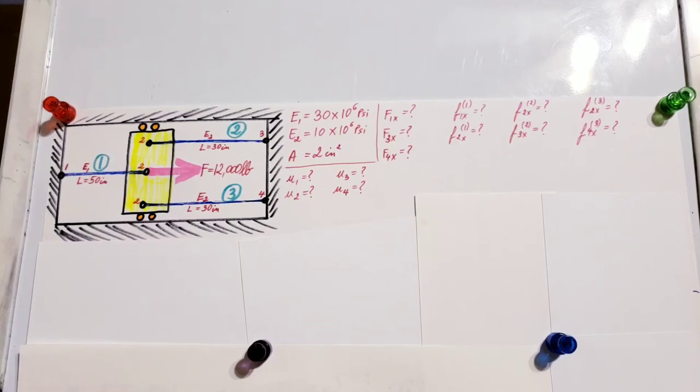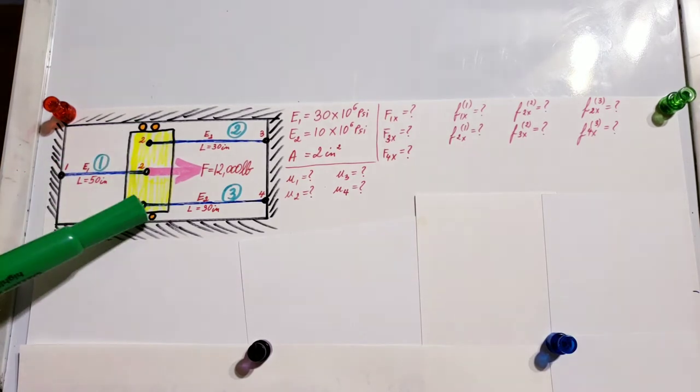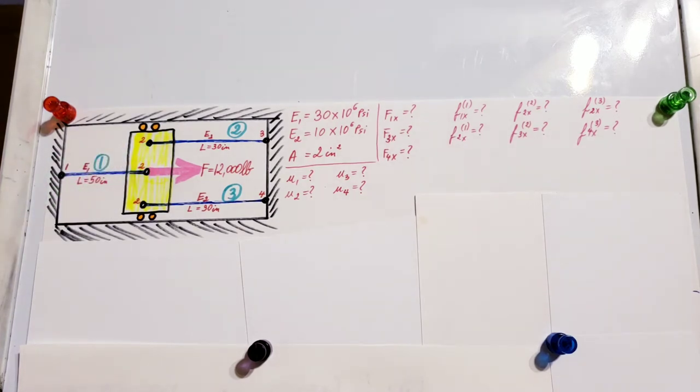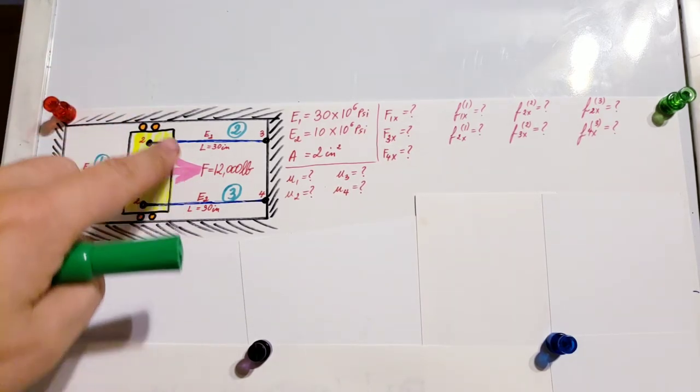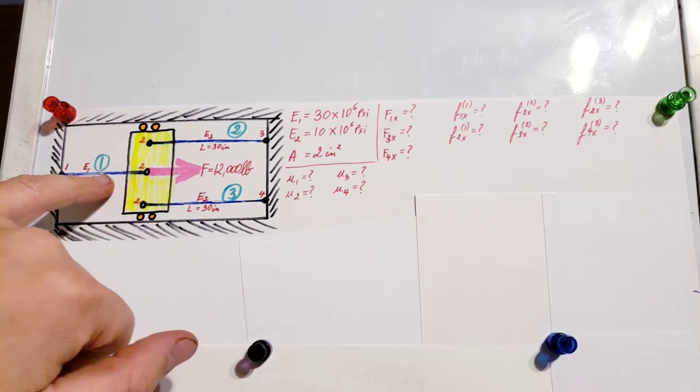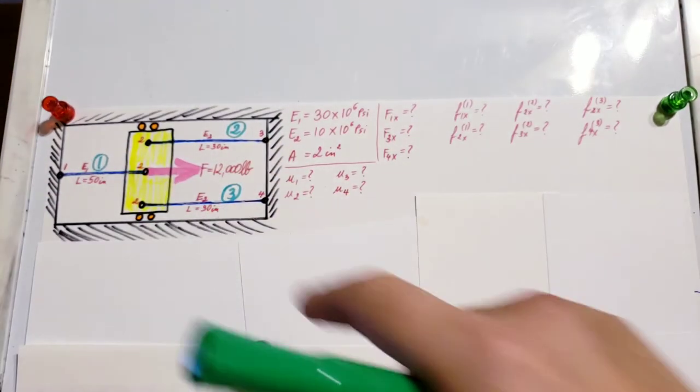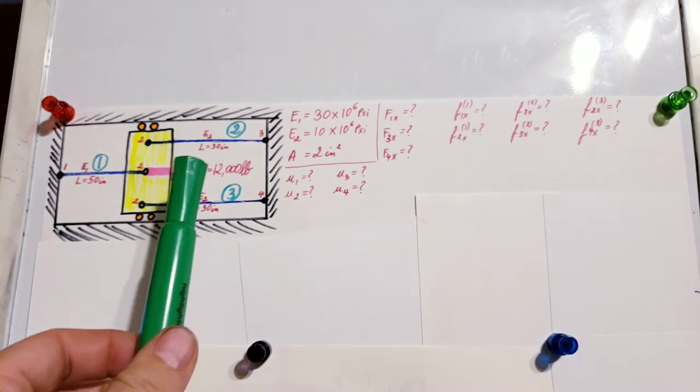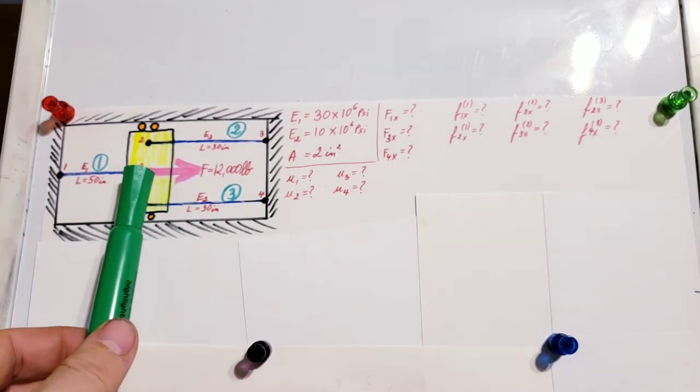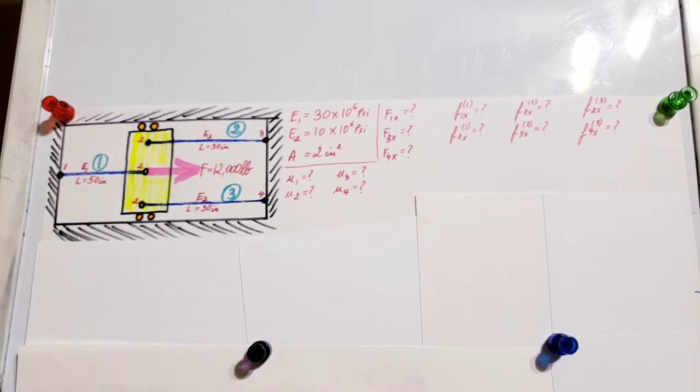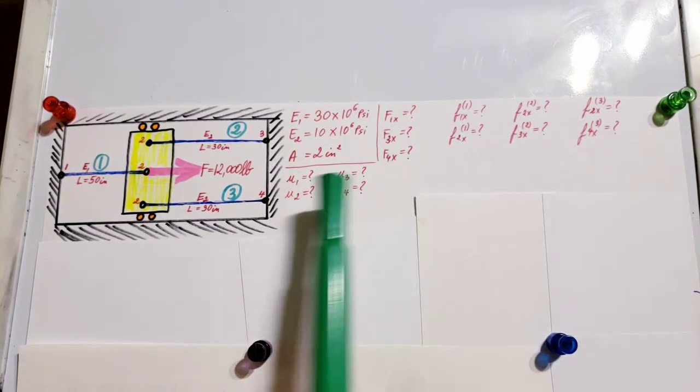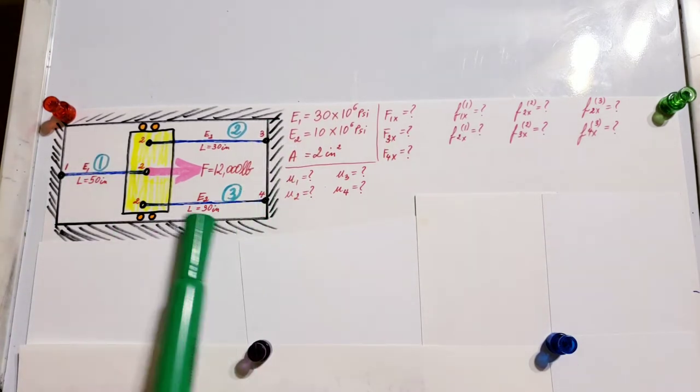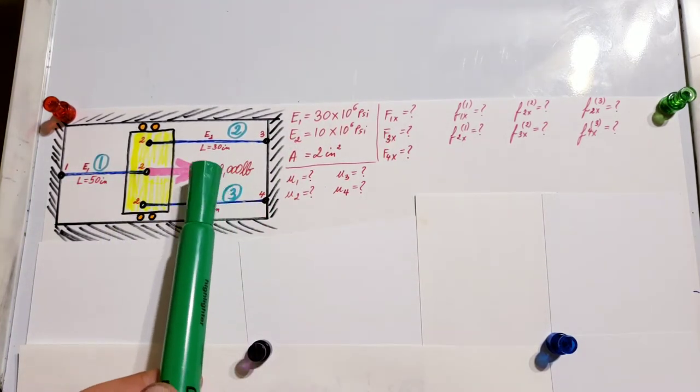This is a finite elements problem analyzing a bar assemblage. The yellow rectangle represents a rigid bar with no bending or shape change. We have a bar here and two on this side, with a 12,000 pound force acting at the middle. We need to find displacements at u1, u2, u3, u4, the global forces at nodes 1, 3, and 4 (at node 2 we already know it), and the local forces in each element.